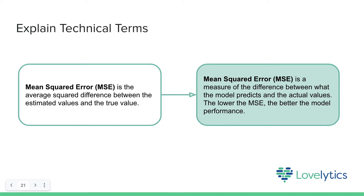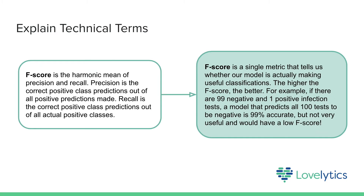Similarly, for mean squared error, or MSE, instead of the technical definition, we can say that MSE is a measure of the difference between what the model predicts and the actual values — meaning the lower the MSE, the better the model performance. Some technical terms are harder to explain, especially terms that are formulas made up of other technical terms. Take F-score, a common classification metric composed of precision and recall. Instead of a full technical definition, you can give a practical example: F-score is a single metric that tells us whether our model is actually making useful classifications. The higher the F-score, the better.